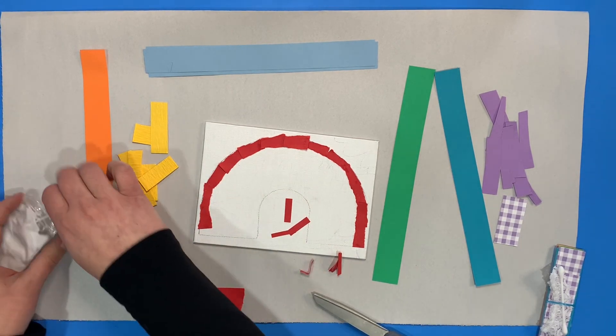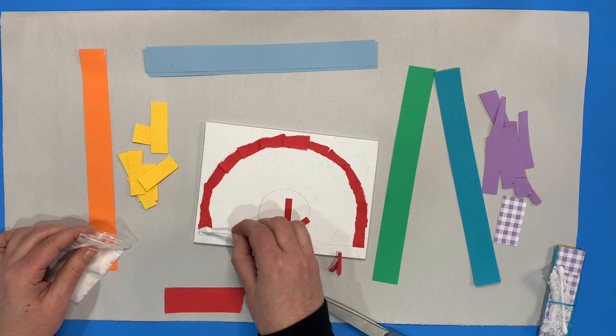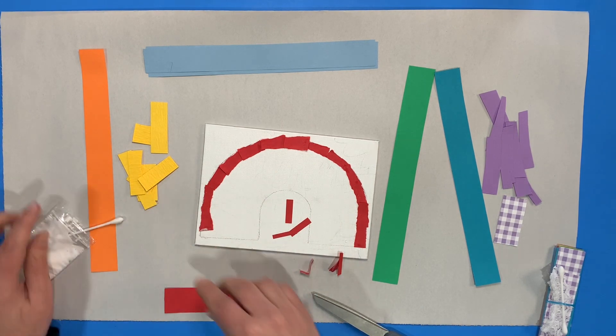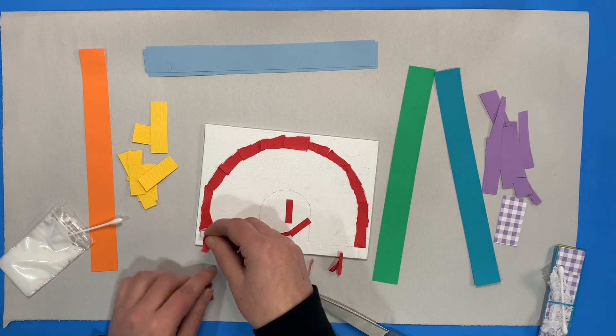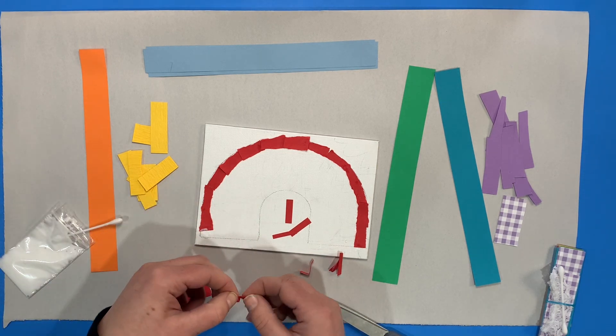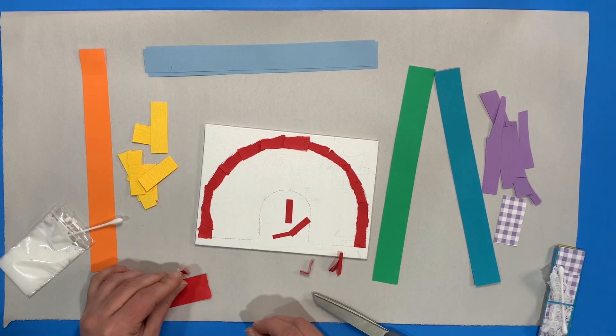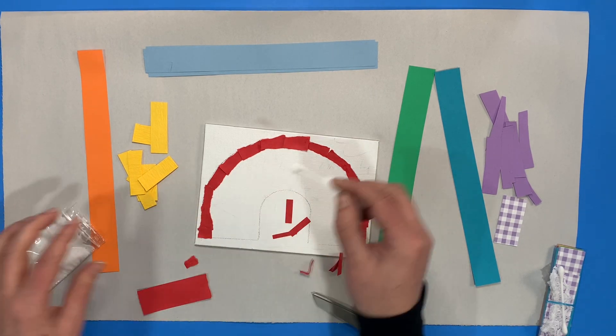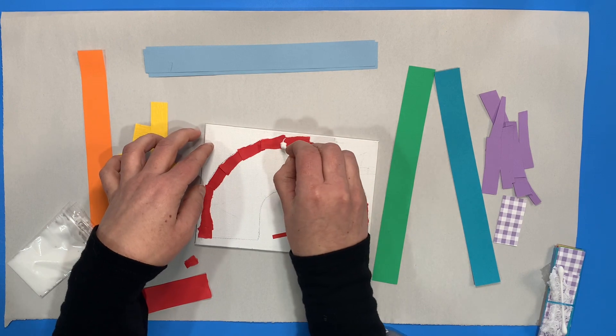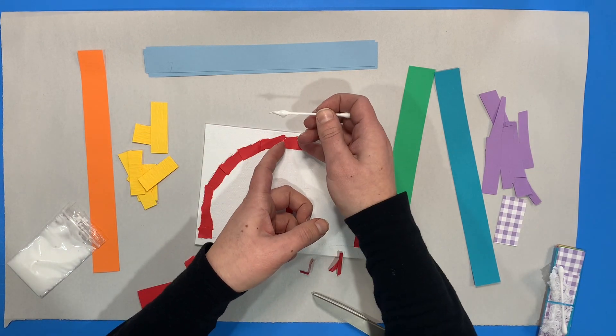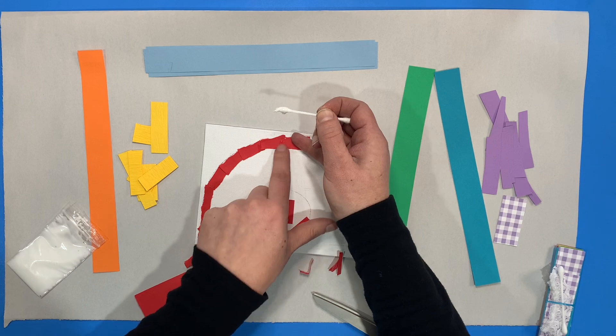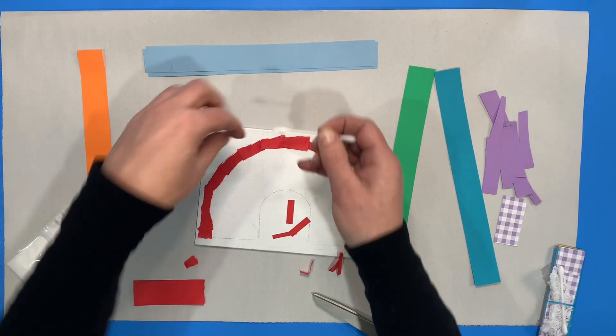Anything extra that you have, you could always save it. I know at our house we have a giant scrap bin. This is a little too big, so I'm going to rip it again. And you can always use those pieces that you've saved from other projects for different crafts and different scraps at home, different things you might make. It's always fun to keep those extra things.